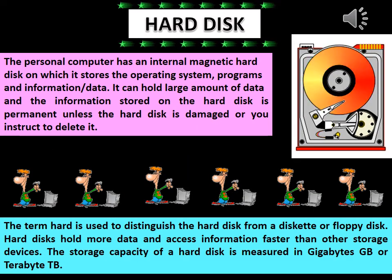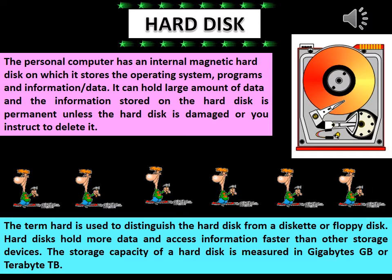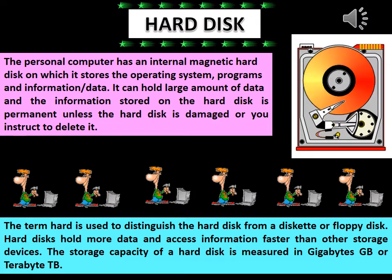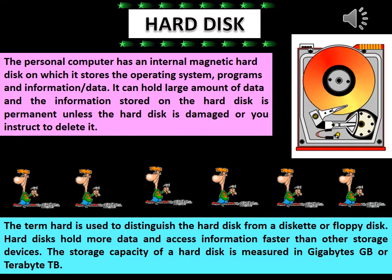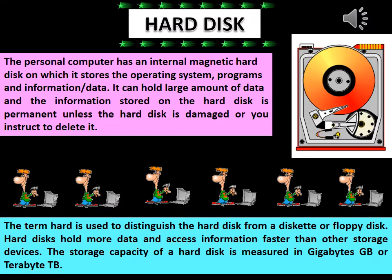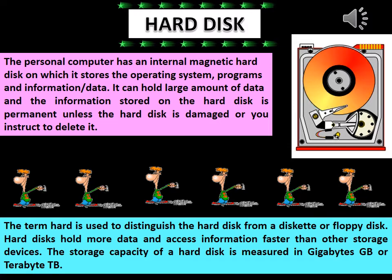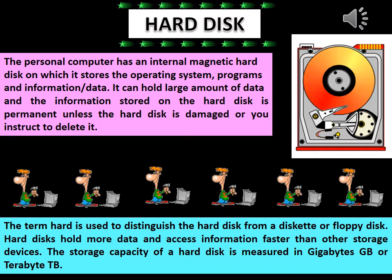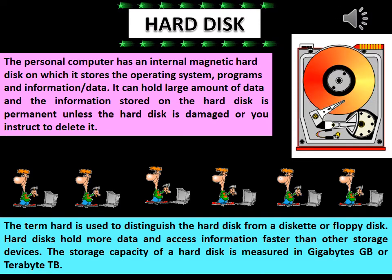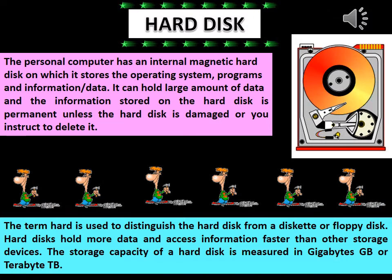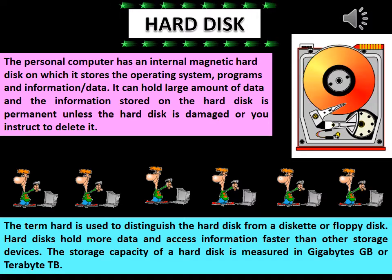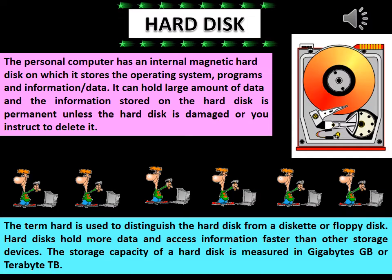Hard disk. The personal computer has an internal magnetic hard disk on which it stores the operating system, programs and information. It can hold a large amount of data and the information stored on the hard disk is permanent unless the hard disk is damaged or you instruct it to be deleted. The term 'hard' is used to distinguish the hard disk from the floppy disk. Hard disk holds more data and accesses information faster than other storage devices. The storage capacity of a hard disk is measured in gigabytes or terabytes.